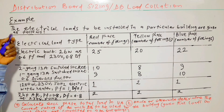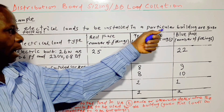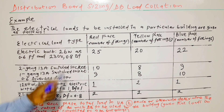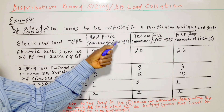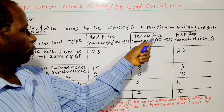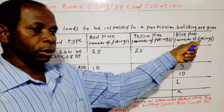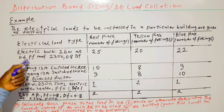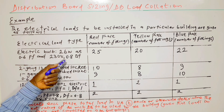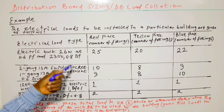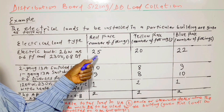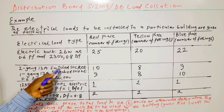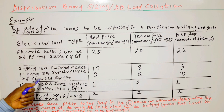The electrical loads to be installed in a particular building are given as follows. Electrical load type — by color: red phase, yellow phase, and blue phase number of fittings or appliances. Electrical bulb: 26 watts at 0.6 power factor, 230 volts, 0.8 diversity factor. We have 25 on red phase, 20 on yellow phase, 22 on blue phase. And 2-gang cardinal switch circuits at 0.6 diversity factor.